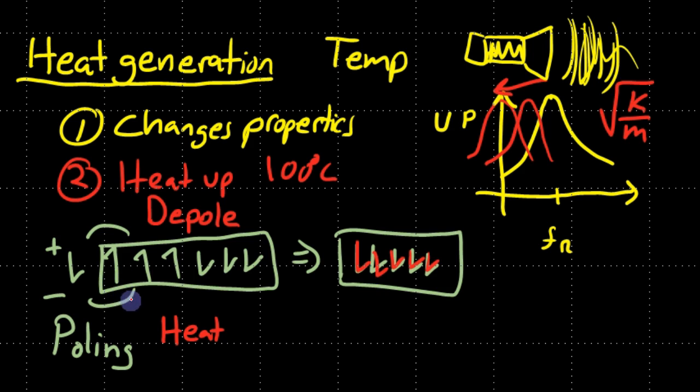What we actually do when we're doing this process called polling - we often heat the material, we heat it to let's say 100 degrees Celsius. The reason we heat it is because when we're heating the material, it's more easy for these dipoles to in fact change their orientation and therefore pole the material.